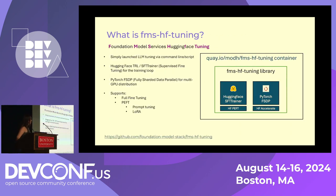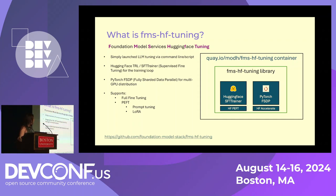We've got this Foundation Model Services — FMS HF Tuning — it's a bit of a weird acronym, but it's out there on GitHub with a link at the bottom. It's essentially a wrapper around the Hugging Face SFT Trainer library, which is what you'd use to fine tune a model. It uses PyTorch FSDP for distributed training — so if you want to train across multiple GPUs, it shards the data and brings everything back together. We're stitching existing open source libraries into a script that users can just run from the command line. We currently support full fine tuning, and two kinds of parameter-efficient fine tuning: prompt tuning and LoRA.